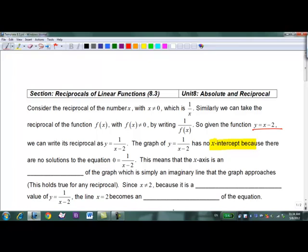Remember that the x-intercept occurs where the y value is 0. This means that the x-axis is called an asymptote.